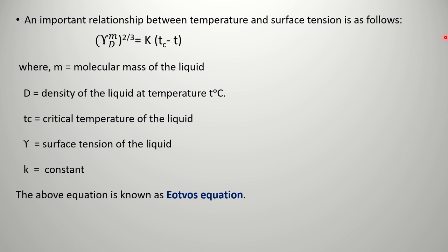Now, a relation about temperature and surface tension is given by the Eötvös equation: gamma times m to the power 2/3 equals K times (Tc - T). Here, m is the molecular mass of the liquid, D is density of the liquid at temperature T degrees centigrade.